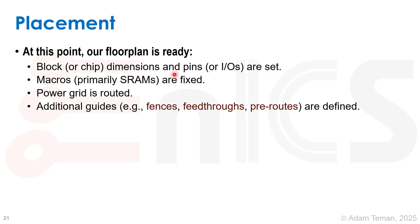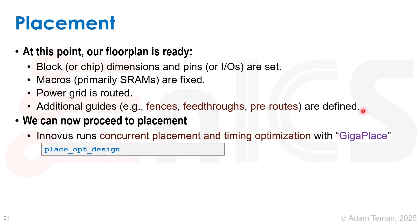We have now finally arrived at the stage of placement. Our floor plan is ready, we have the block or chip dimensions and pins or IOs set with locations for all of them. The macros, primarily the SRAMs, are fixed in place. We have a power grid routed and connected, and additional guides such as fences, feed-throughs, and pre-routes defined inside the floor plan. Now we're ready to place our design.